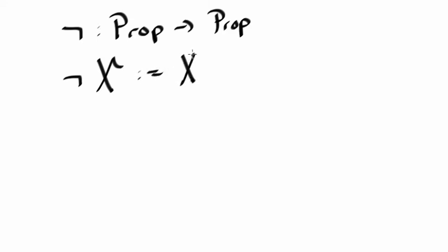So negation, let me use this symbol, is a function going from propositions to propositions. So I can apply negation to a proposition X and I'll have a proposition. And how is that defined? It's defined to be X implies false.